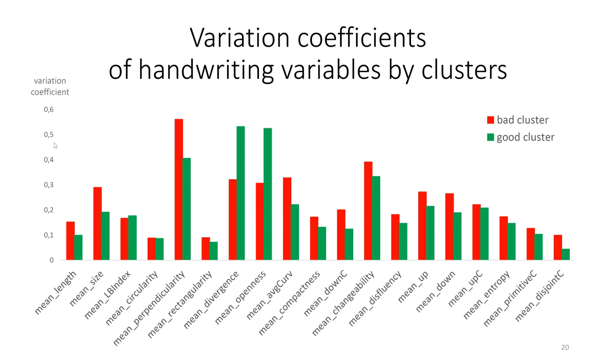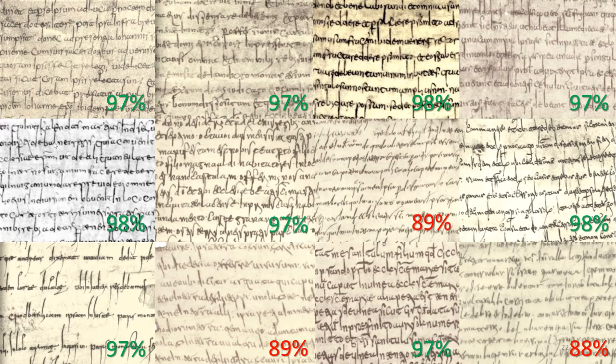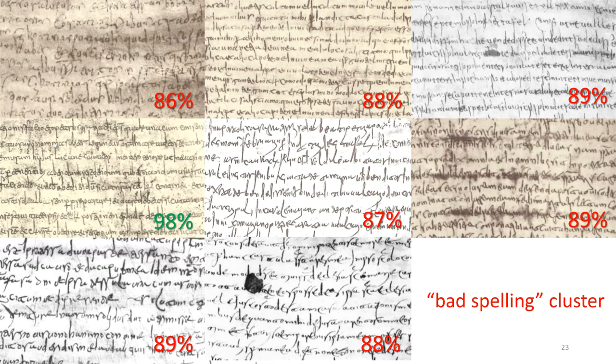The bad spelling cluster shows with almost all handwriting features more variation than the good spelling cluster. Only length breadth index divergence and openness variables stand out. I would say this difference in handwriting between the two clusters can even be seen by a naked eye. If we compare these extracts from the documents that belong to the bad spelling cluster with the handwriting of the good spelling cluster. This one is the good spelling cluster. Take notice of the relative consistency and balance of the handwriting. And this is again the bad spelling cluster for comparison. Here some documents show quite shaky handwriting and the overall impression is rather unsettled.